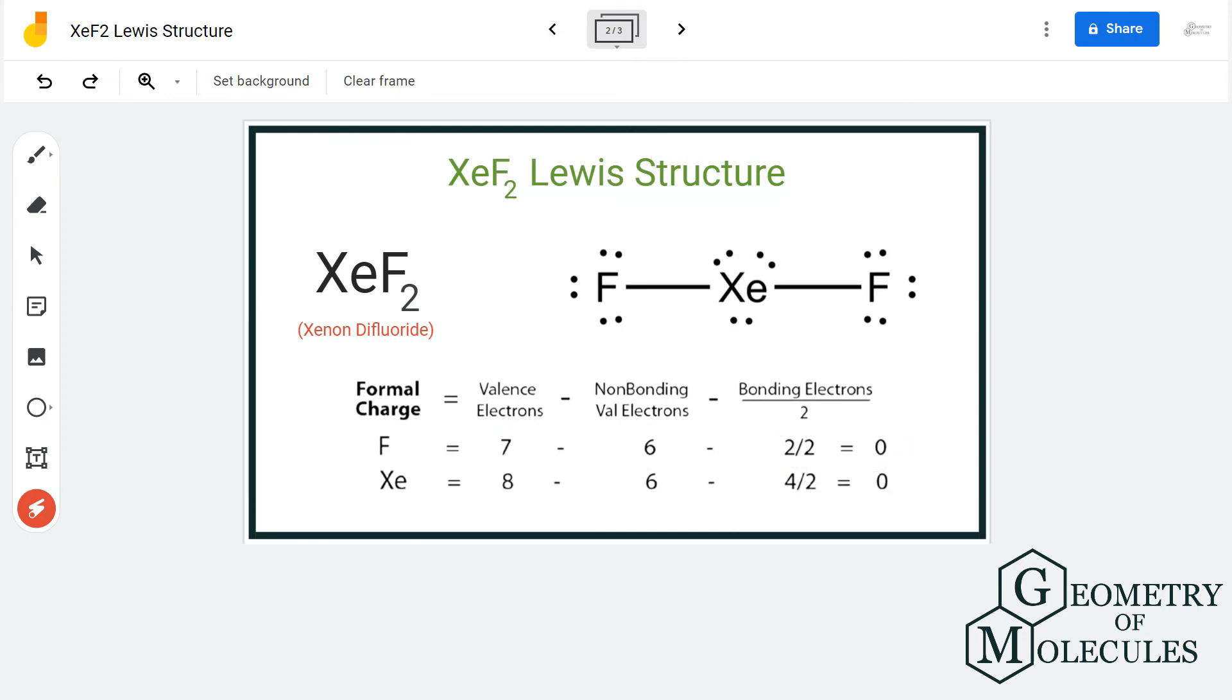Similarly, we will calculate the charges for xenon. Xenon has 8 valence electrons, there are 6 non-bonding valence electrons, and there are 4 bonding pairs of electrons. So here also, we are getting a formal charge of zero. This is the most stable structure for XeF₂, and hence this is the most accepted Lewis structure for XeF₂.